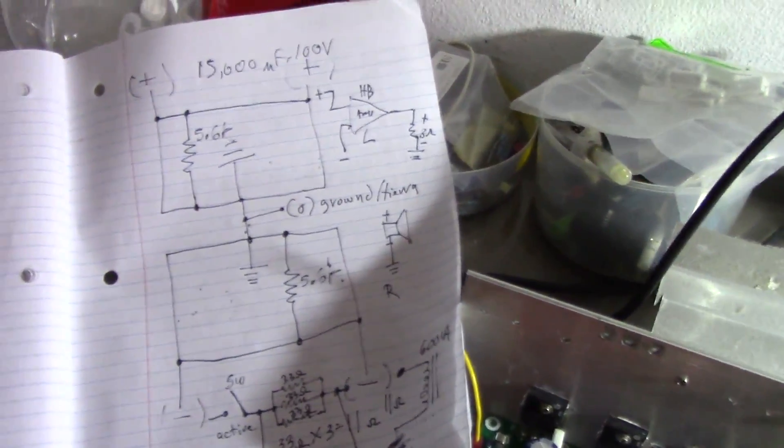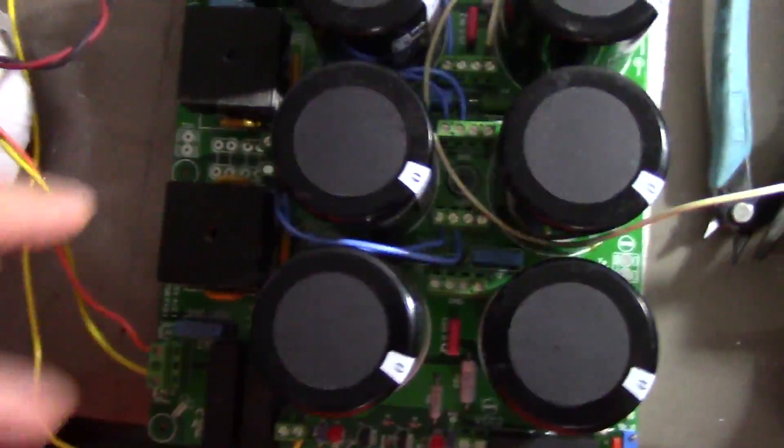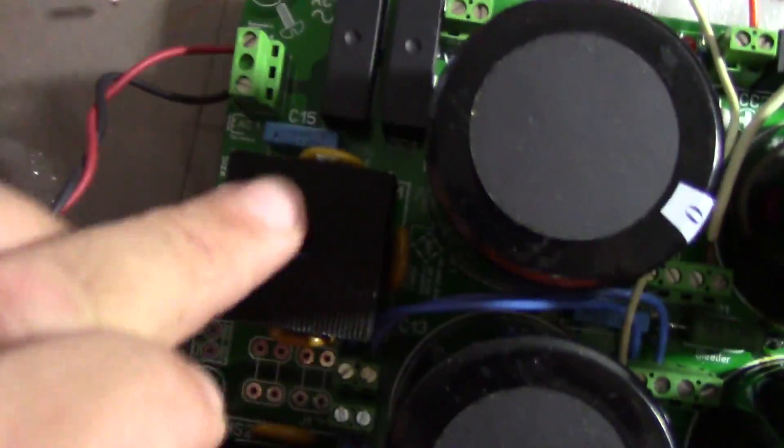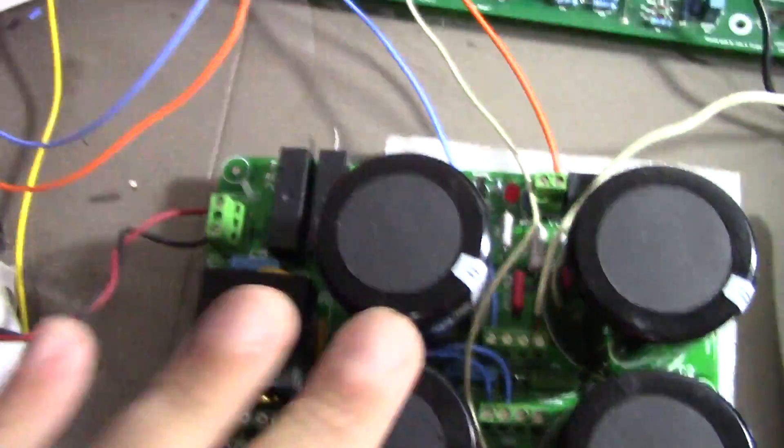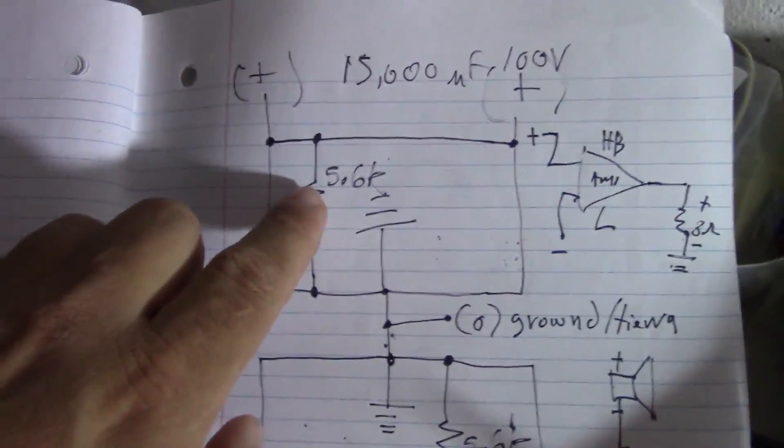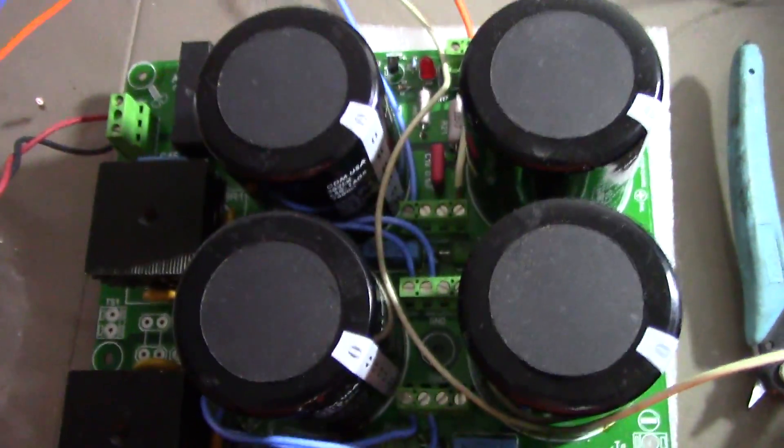The fuses are protecting the bridge rectifier if something happens. The bleeder resistor is on the positive rail - this one right here. That one is the negative. It's gonna bleed out the power supply after you turn off the audio amplifier, so it's gonna discharge the capacitor slowly.